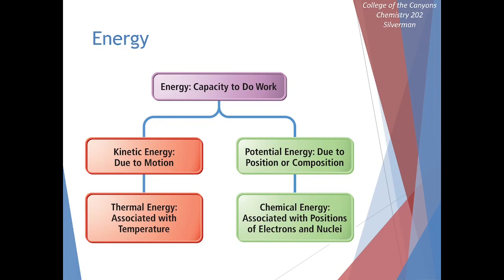The other big category is potential energy — energy that can be stored within an object. This can be based on something's position; if you put it high on a shelf, it can fall down and release that energy. Or it can be based on its chemical structure — energy stored within chemical bonds. This can also be something like electrical energy stored within a battery.